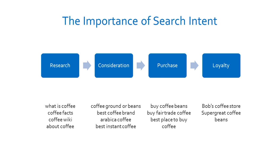Anytime you're thinking about keywords, you really want to think about search intent. The reason why search intent is important is because, from an SEO perspective, when you search something in Google, Google really cares what results are going to be good for whatever you're searching. That's their business — if Google started delivering bad results, people would switch to some other search engine. Their business is to provide results that satisfy a user's query, and because of that, Google is going to serve up results that they think answer or help the user with whatever they're searching.